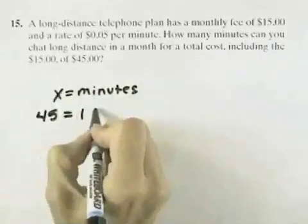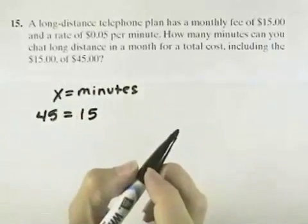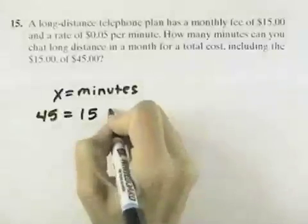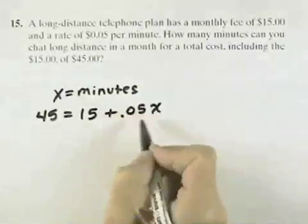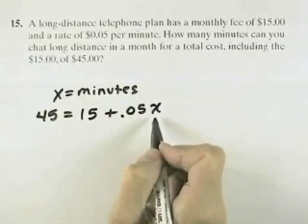Well, that should equal the $15 that we start with for the monthly fee, but then also the .05, the 5 cents per minute, so that would be .05 times X, the number of minutes that we talk.